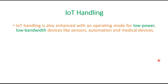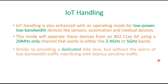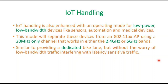IoT handling is also enhanced in Wi-Fi 6 with an operating mode for low-power, low-bandwidth devices like sensors, automation, and medical devices. This mode separates these devices from the AX access point using a 20 MHz-only channel that works in either the 2.4 GHz or 5 GHz bands — similar to providing a dedicated bike lane — preventing low-bandwidth traffic from interfering with latency-sensitive traffic.